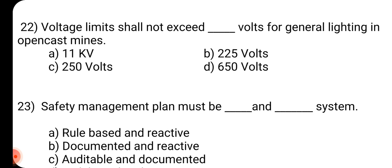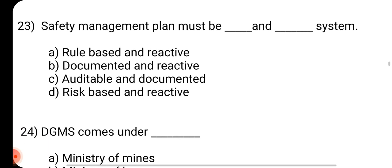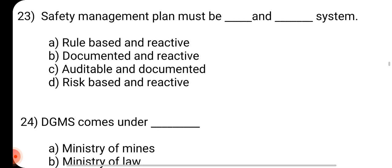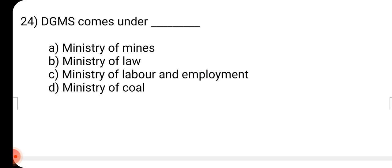Question number 22: Voltage limit shall not exceed dash volts for general lighting in opencast mines. Answer is C: 250 volts. Question number 23: Safety management plan must be dash under dash system. Answer is C: Auditable and documented. Question number 24: DGMS comes under dash. Answer is C: Ministry of Labor and Employment.